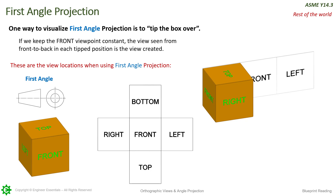That's why it's important to identify which symbol is on your print. If it's this one, it's first angle. You can also remember this one because if we tip the object over, that's what it would look like in that side view.